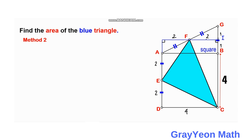For our second method, we can actually subdivide this triangle into 3 parts. We draw a line from F downwards and from E to BC, continuing the line downwards. So we form 2 triangles. We can label this point as J.